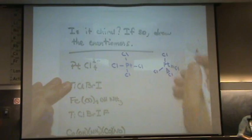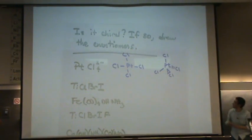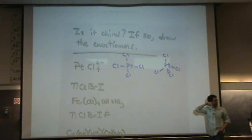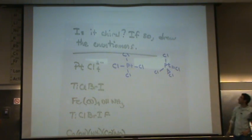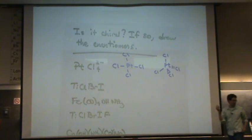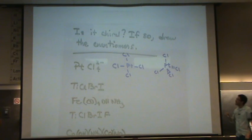And if you forgot your shapes a little bit, whenever I draw a triangle, that means it's coming out towards you, coming out into the classroom. Whenever you see a dash, that means it's going away from you, into the board or into the screen. And a straight line, or a line, that means that it's flat in the screen.